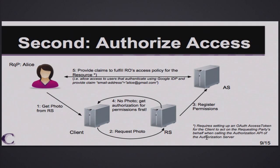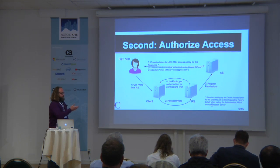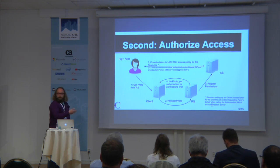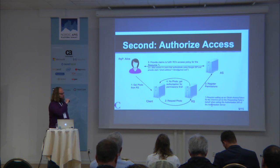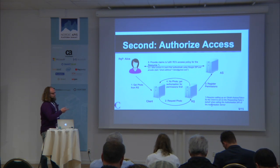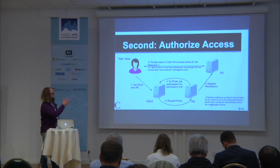The second stage is about authorizing access — this is where it gets a little bit more complex. Alice receives a reference to the photo that Bob has with the resource server, and it tells her photo frame viewer — her client — to get that resource. But as there is no authorization for Alice set up yet, the resource server will register the required permissions to access this resource with the authorization server that is used to protect that particular photo, and will return the required permissions to the client.